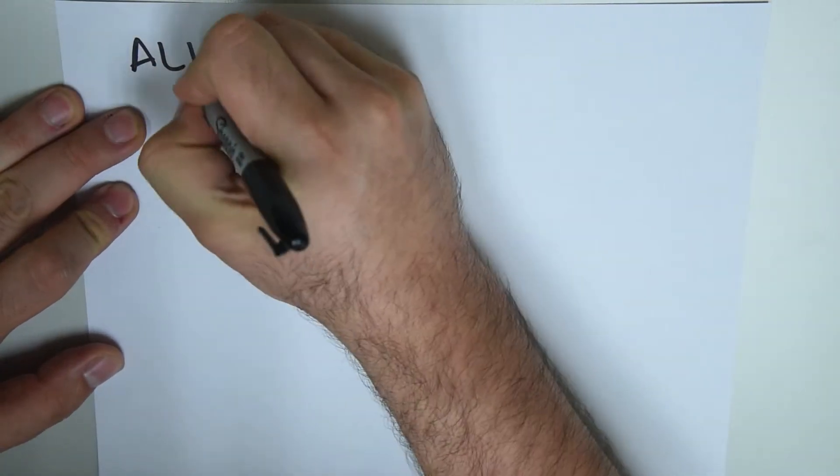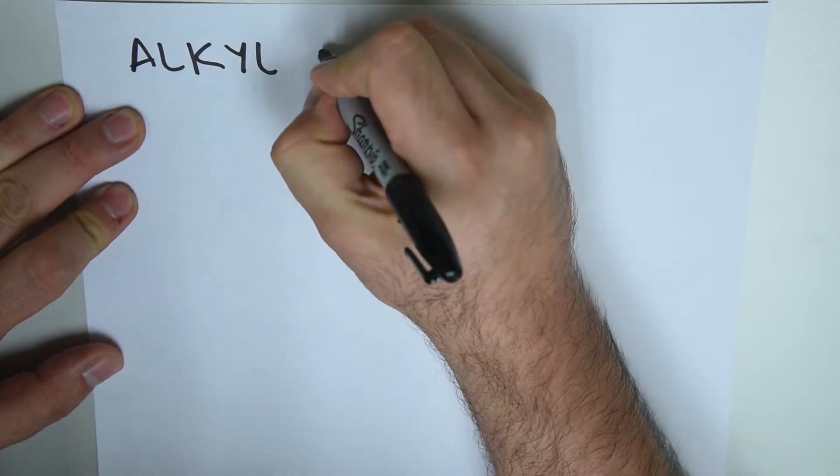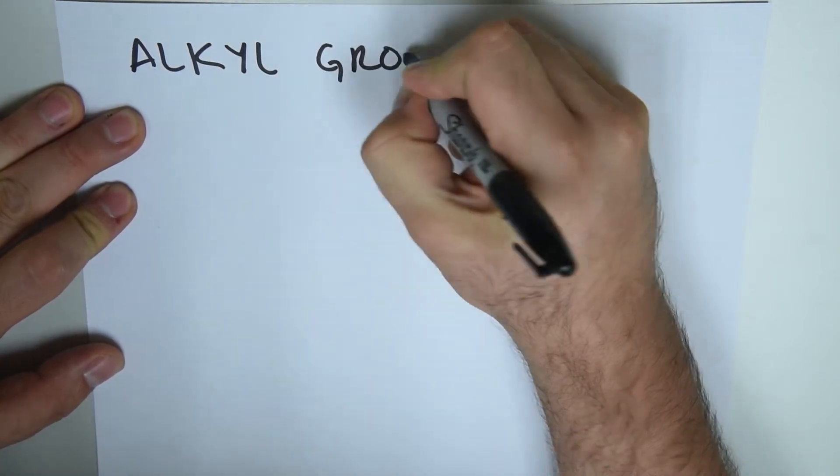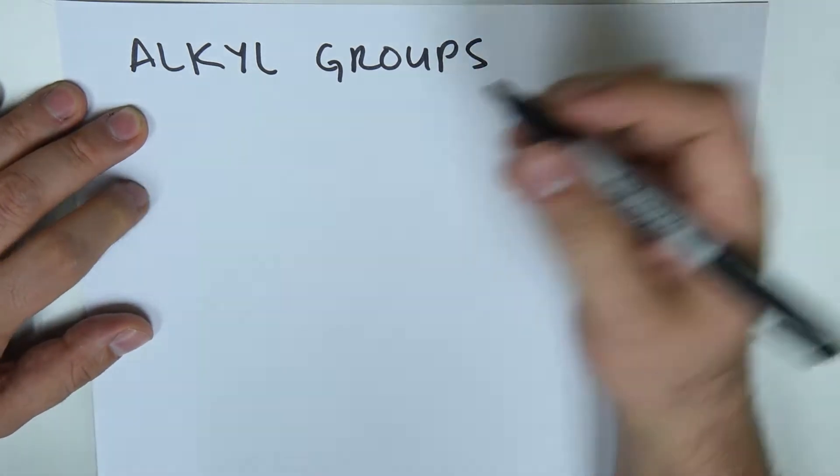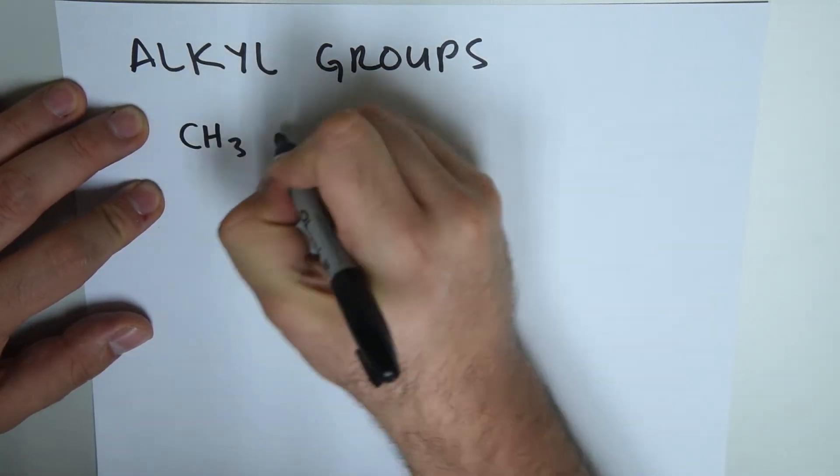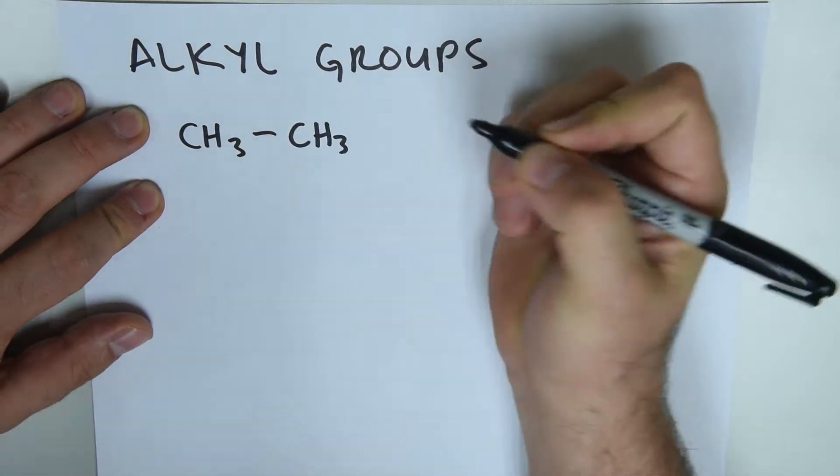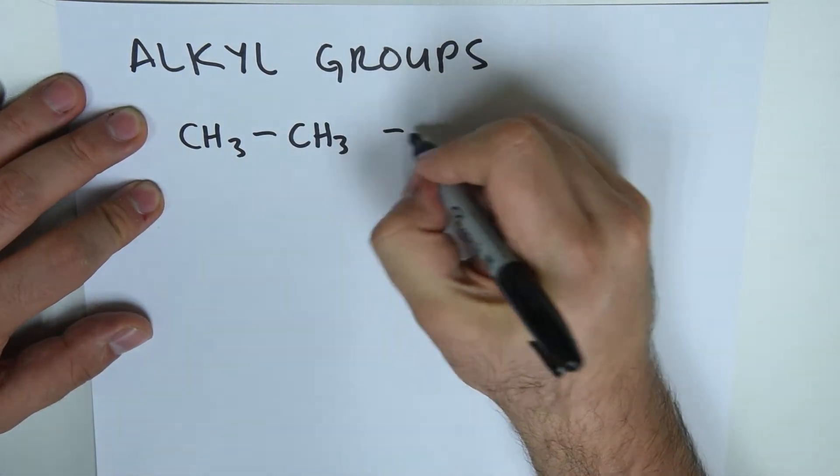We're going to speak a little bit about alkyl groups. Alkyl groups, like their name suggests, are groups that are derived from alkyl-like molecules. However, what's the difference? Let's take this example: CH3-CH3 in its condensed form. What is this? This is ethane.